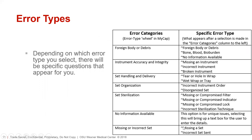Depending on which error type you select, you will then be given specific options based solely on that error category. For foreign body or debris: bone, blood, bio burden, no information available, or foreign body or debris. Instrument accuracy and integrity has missing instrument, incorrect instrument, or broken instrument. Set handling and delivery has tear or hole in wrapper, or wet wrap or tray. Set organization has incorrect instrument order or disorganized set. Set sterilization has missing or compromised filter, indicator lock, or incorrect sterilization technique. Missing or incorrect set: you will select either missing a set or incorrect set, and then a text box will come up to further expand the details of the issue.